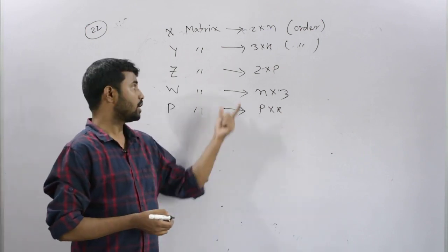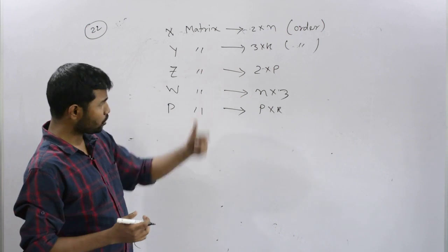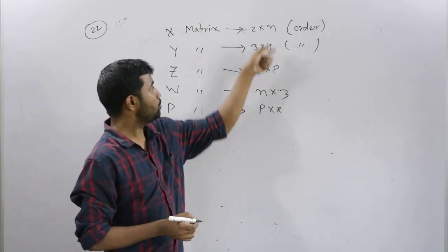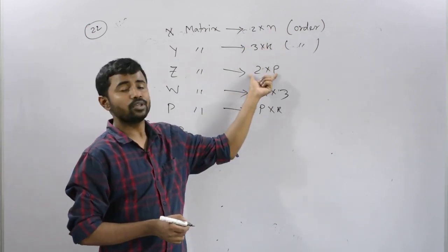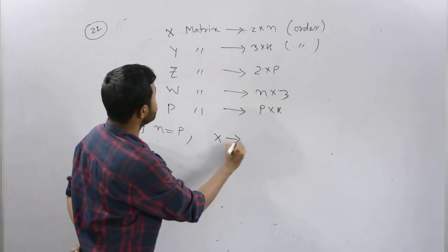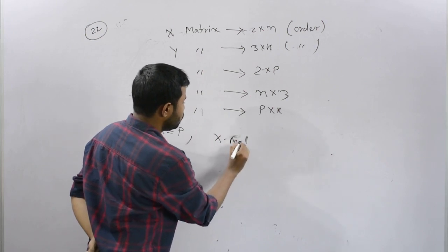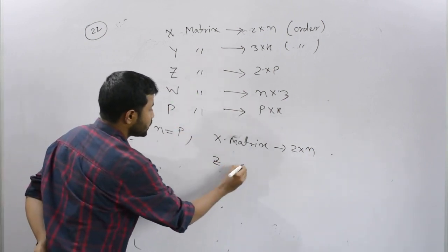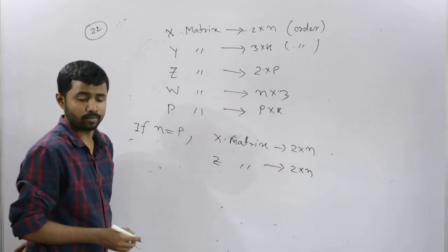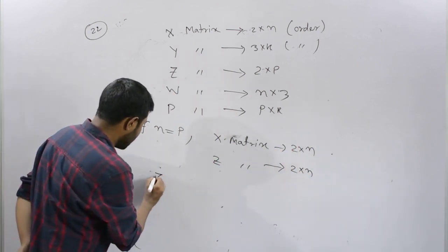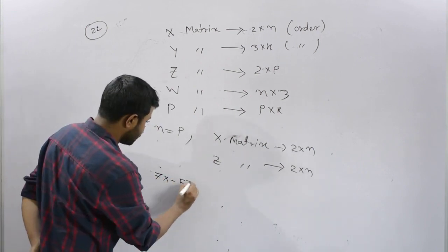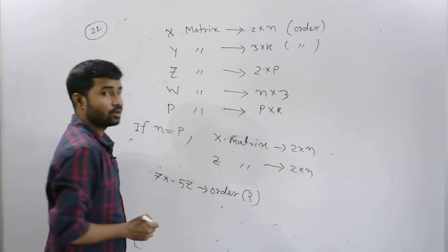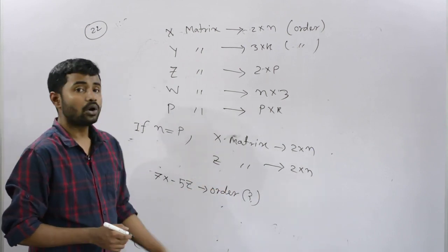The condition given is: if n equals p, meaning n and p are equal. When n equals p, the two matrices have the same order. The question asks for the order of X minus 5Z matrix.